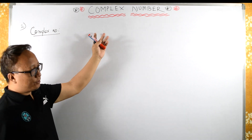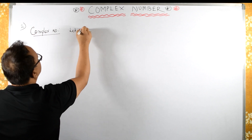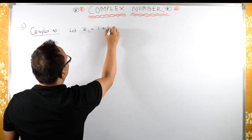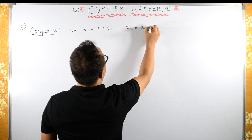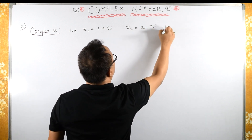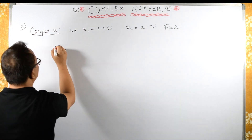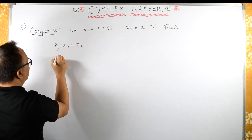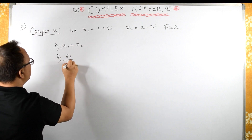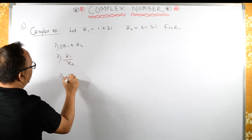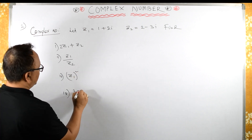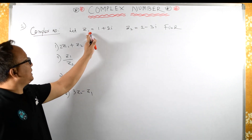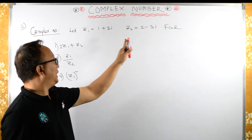Now let us take some more examples so that we can have a clear idea. Let Z1 equals 1 plus 2i and Z2 equals 2 minus 3i. Then find: (1) 2Z1 plus Z2, (2) Z1 upon Z2, (3) Z1 whole square, and (4) 3Z2 minus Z1.